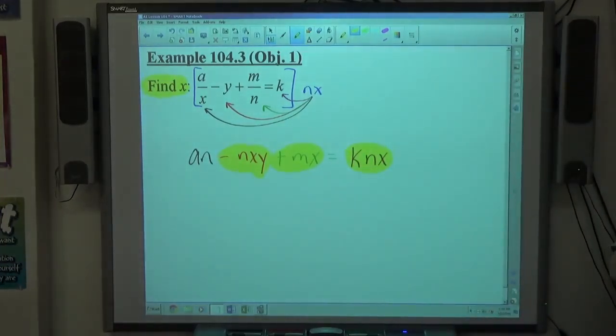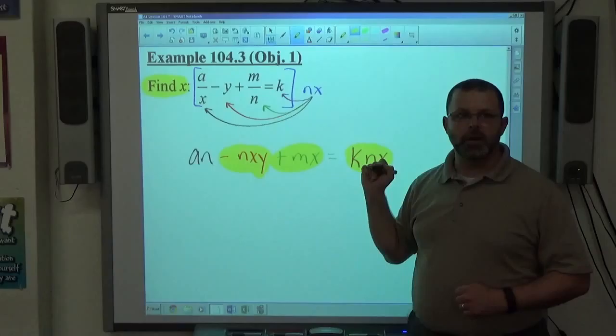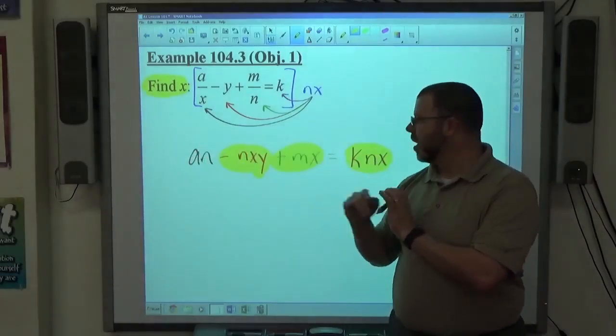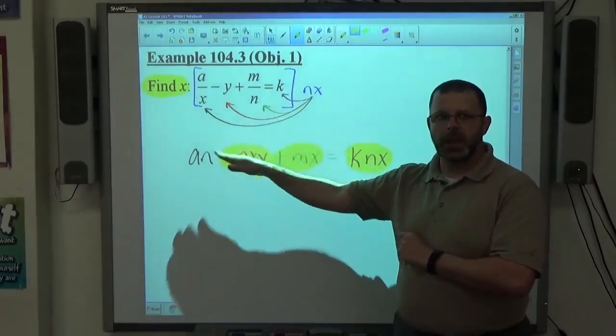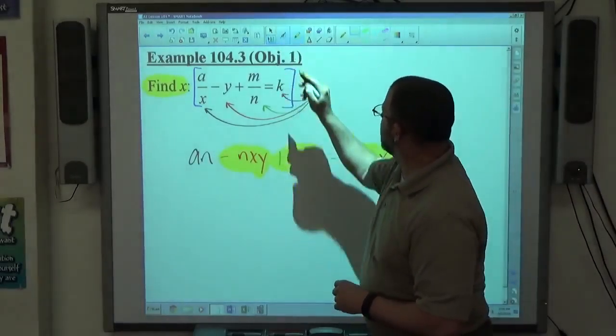Alright, so those three things have to go together. And again, you can pick and choose how you want to do it. I can move the KNX to the left, move AN to the right, that would make it happen. All the X's will be on that side. I can move these two guys over to the right, leaving AN where it's at, then all the X's will be on the right. It doesn't matter how you do it. I'm going to go ahead and move it to the right.